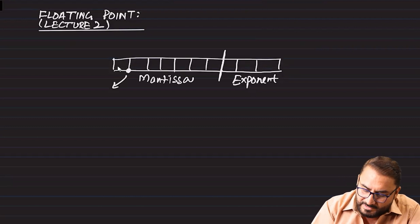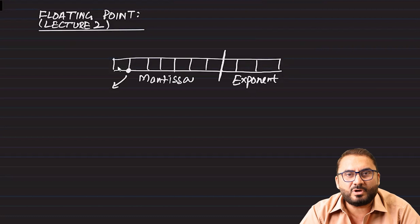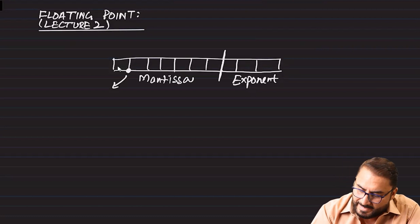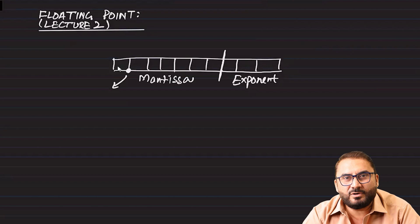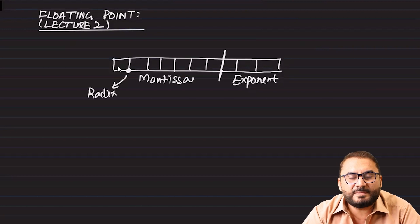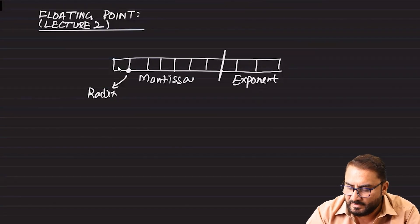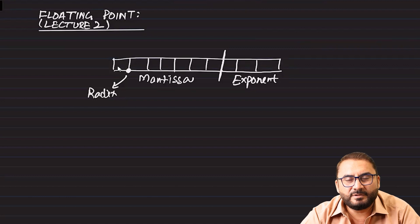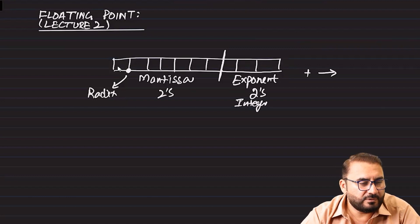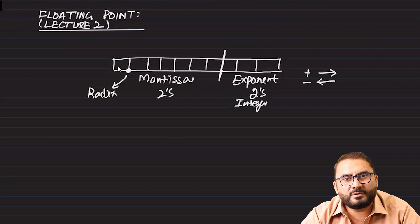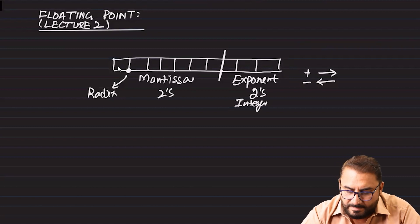Exponent is in two's complement form and mantissa is also in two's complement form. Exponent is an integer because it holds the number of times we have to move the point. If exponent is positive, we move towards the right; if exponent is negative, we move towards the left. So exponent is basically an integer that tells how many times we have to move the point to get the right number.